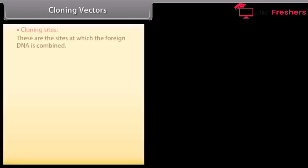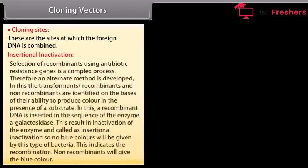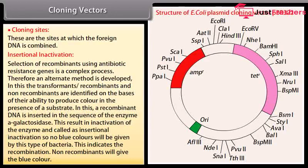Cloning sites are the sites at which the foreign DNA is combined. Insertional inactivation: selection of recombinants using antibiotic resistance genes is a complex process. Therefore, an alternate method is developed. In this, the transformants — recombinants and non-recombinants — are identified on the basis of their ability to produce color in the presence of a substrate. A recombinant DNA is inserted in the sequence of the enzyme β-galactosidase. This results in inactivation of the enzyme, called insertional inactivation, so no blue color will be produced by this type of bacteria. This indicates recombination.